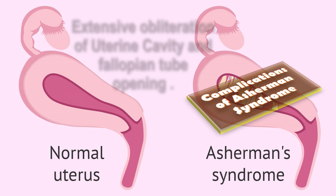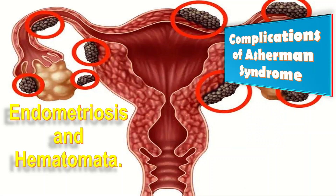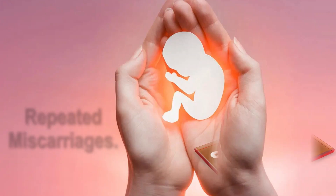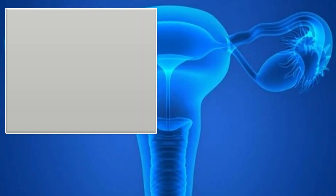What are the possible complications of Asherman syndrome? If left untreated, extensive obliteration of the uterine cavity and fallopian tubes can result. In such cases, if a patient desires fertility, options include IVF, surrogacy, or adoption. Other complications include endometriosis and hematometra formation due to retrograde menstruation, as well as repeated miscarriages.